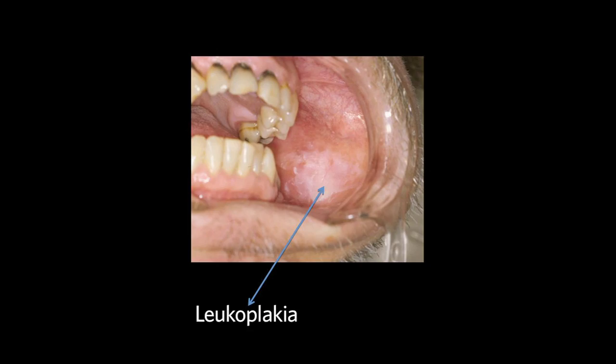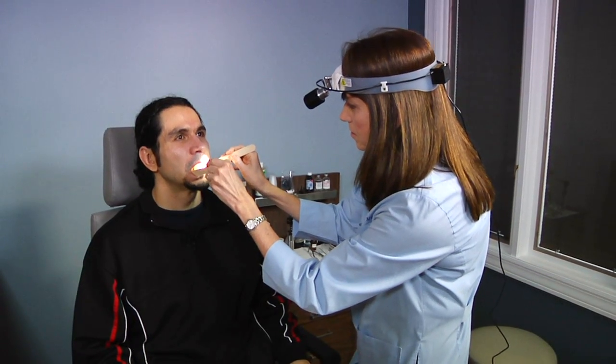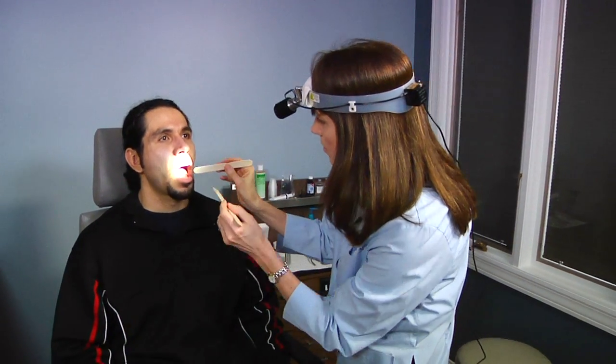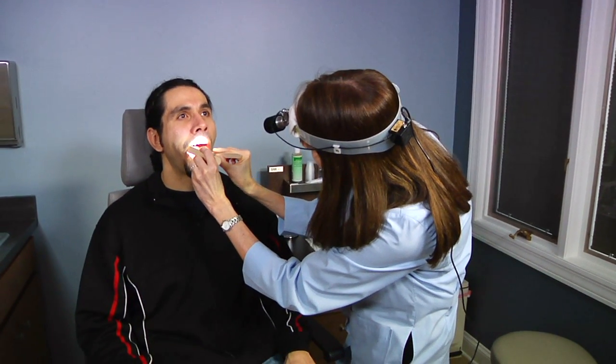A common abnormality in the buccal mucosa is white plaque-like lesions, which often represent leukoplakia. When examining the oral cavity and tongue, a gentle touch is required. It is important to insert the tongue blade slowly and avoid touching the base of the tongue.